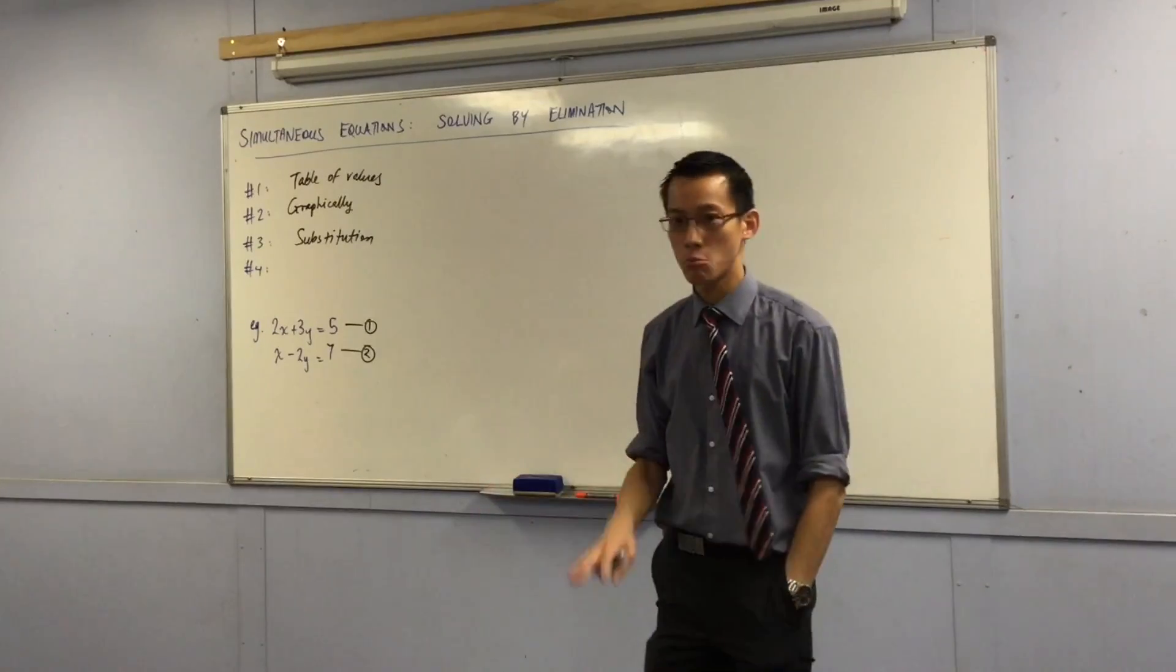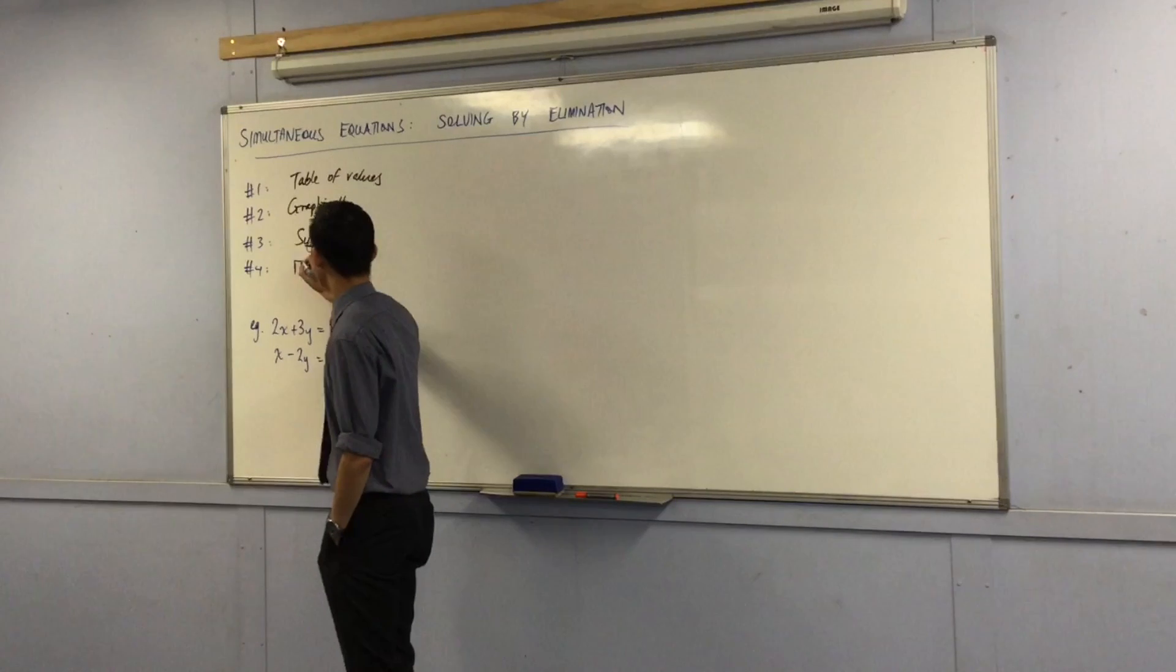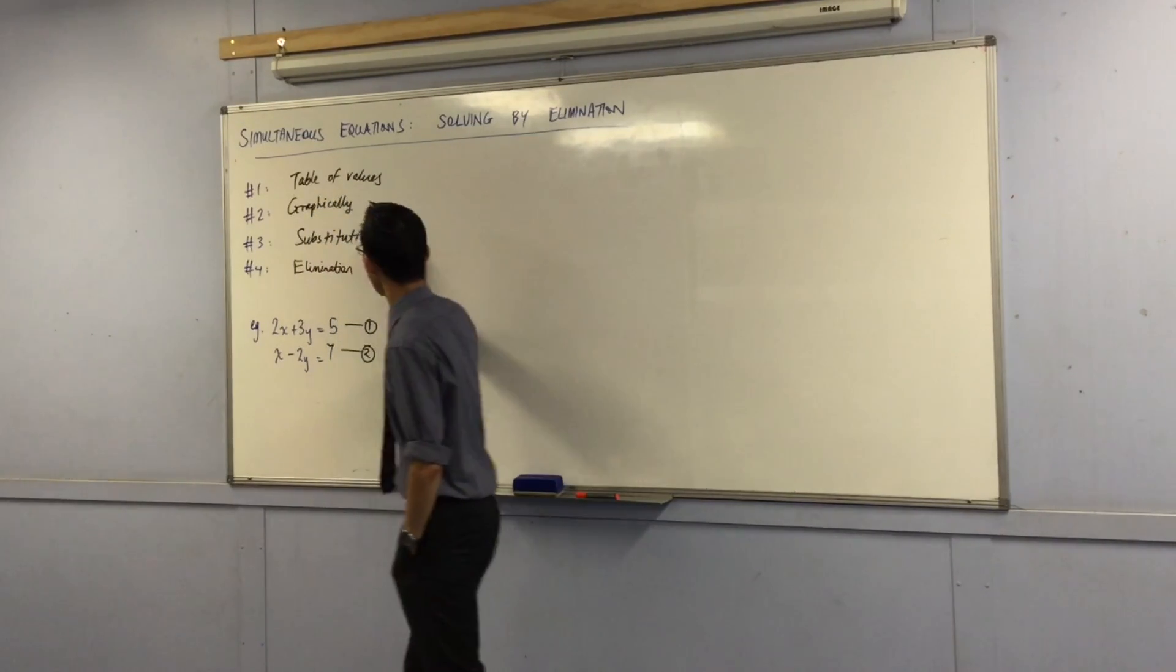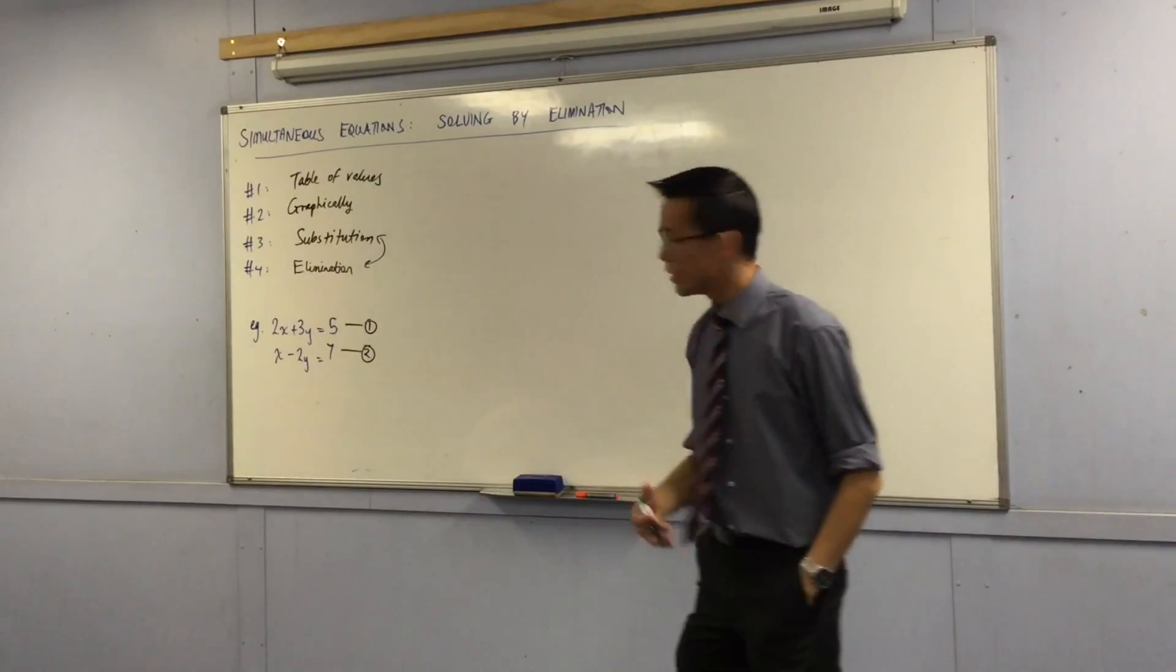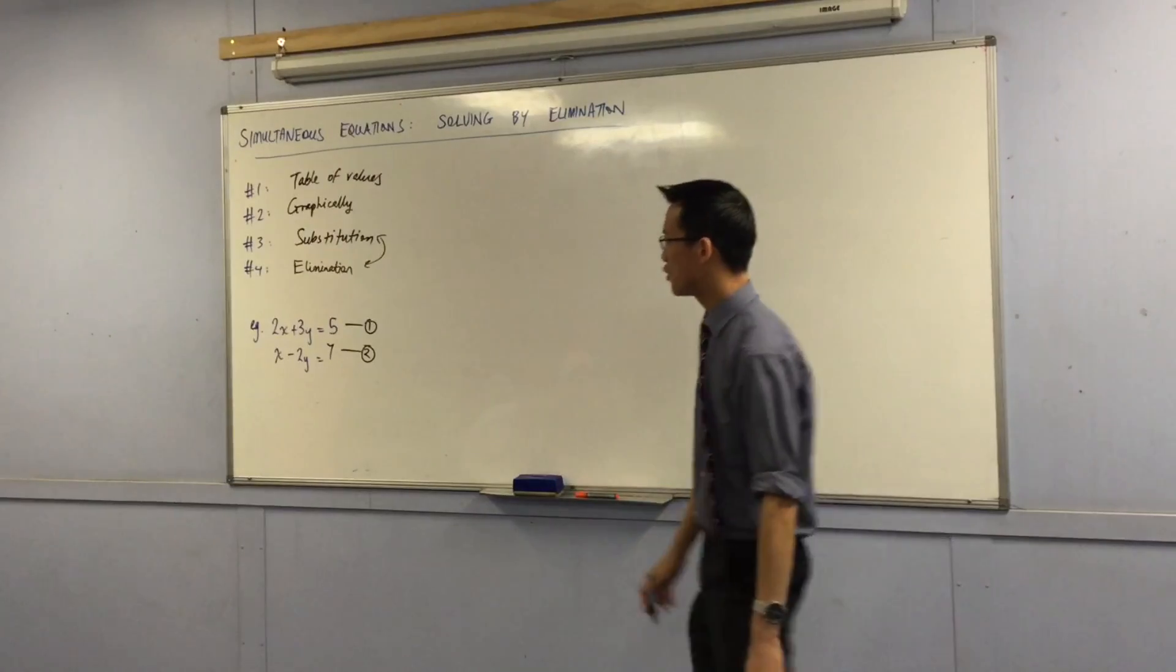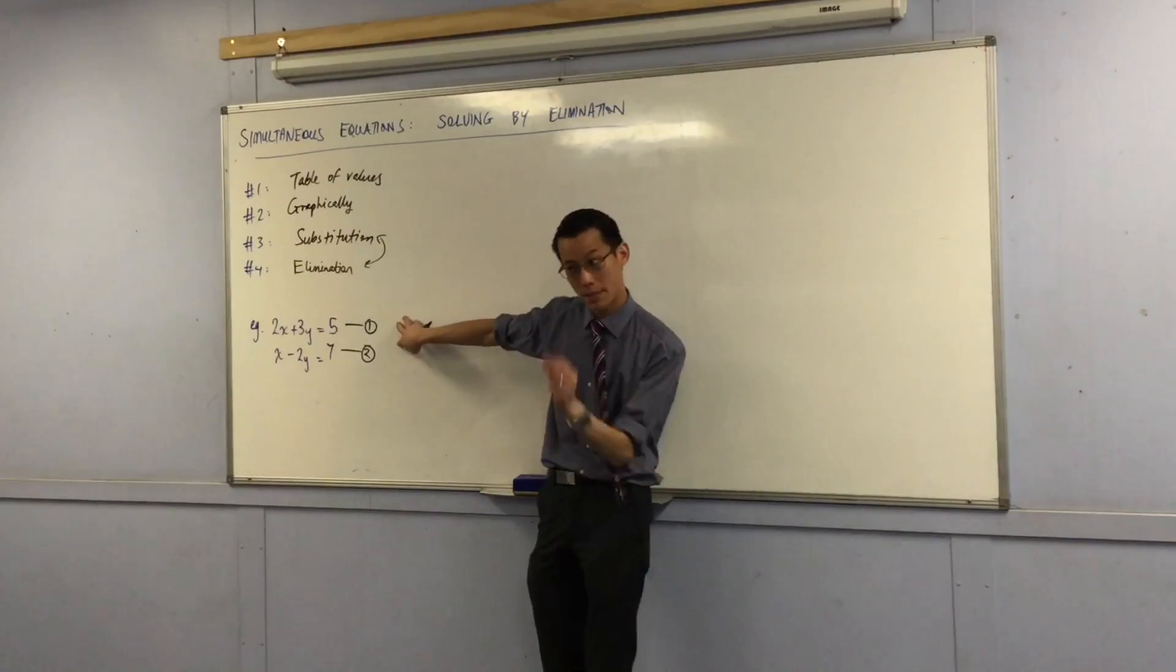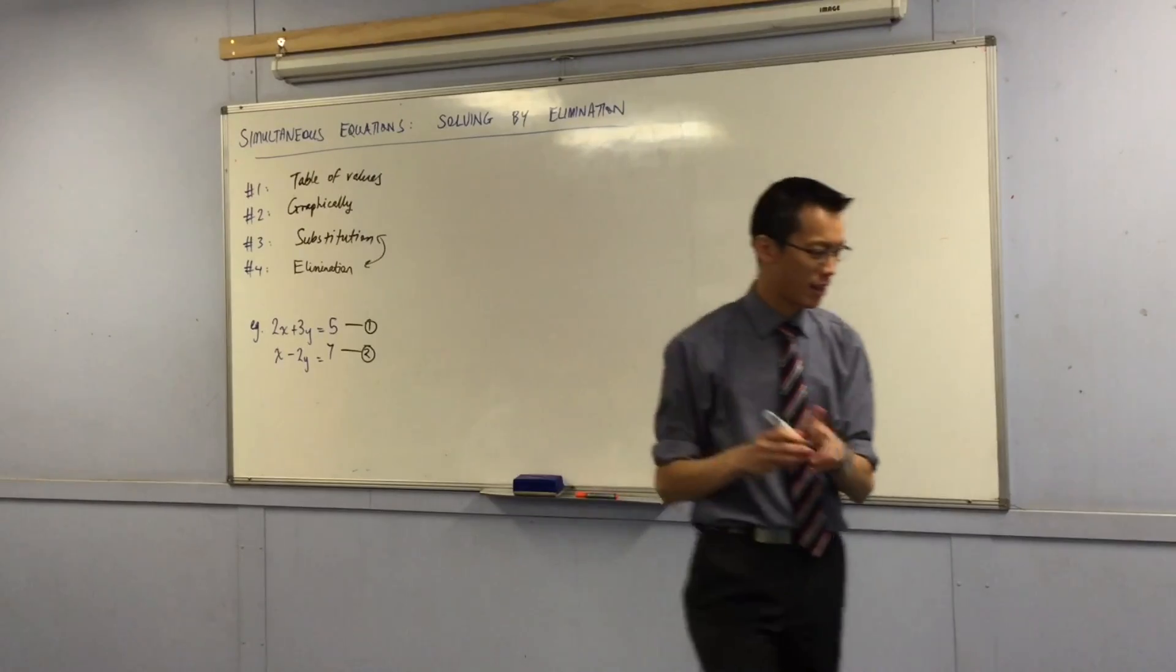Now elimination is the fourth method. Elimination, it's the fourth one, and it's kind of like a parallel to substitution in that, like substitution, it's purely algebraic. You don't have to draw anything. You just have to muck around with these x's and y's in a particular way, and out will leave your solution.